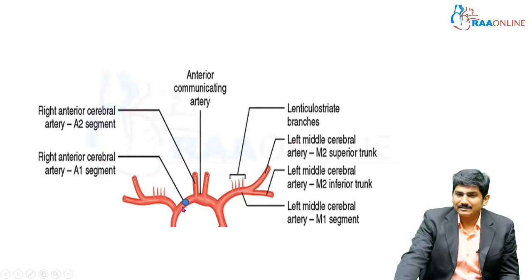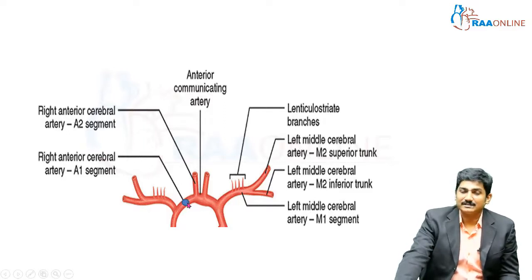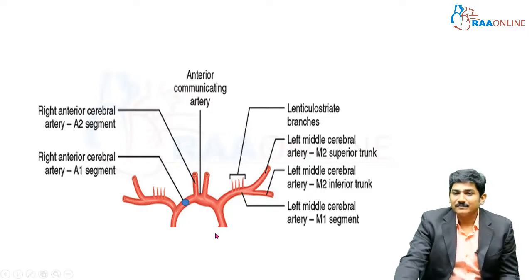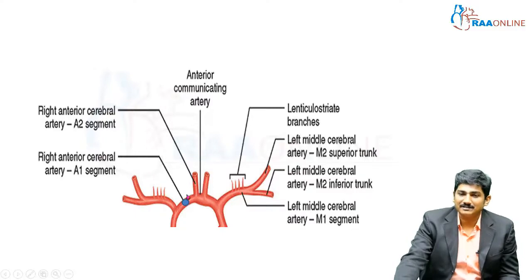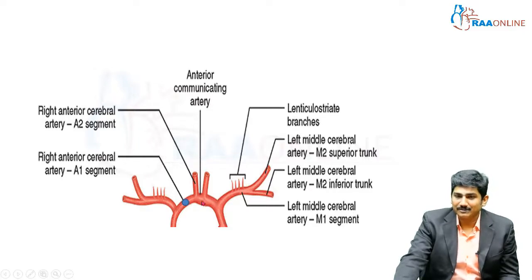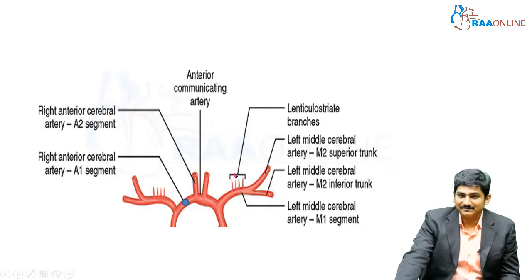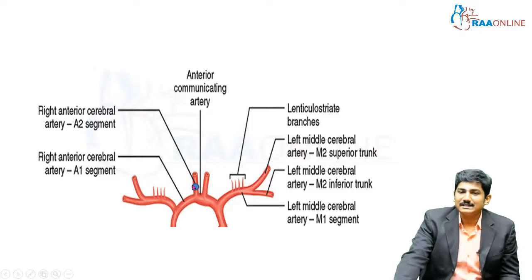Have a look at this picture. If there is a thrombus at the A1 segment, the patient is usually asymptomatic because there is adequate flow from the opposite side which can supply both A2 segments. If one side A1 is blocked, adequate blood supply comes from the opposite segment. However, if there is a thrombus at the A2 segment, that part of the brain supplied by A2 goes into ischemia.